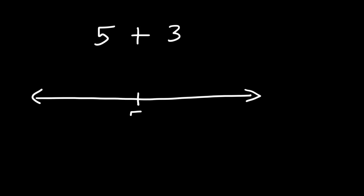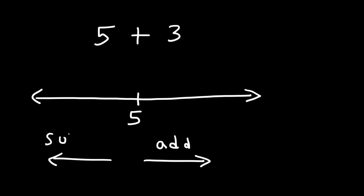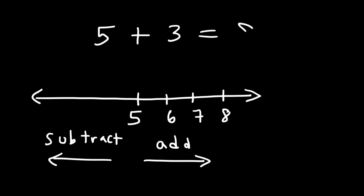So let's start with 5. If we wish to add 3, all you need to do is travel 3 units to the right. If you wish to subtract, travel to the left. So for 5 plus 3, we travel 3 spaces to the right: 6, 7, and 8. So 5 plus 3 is 8.